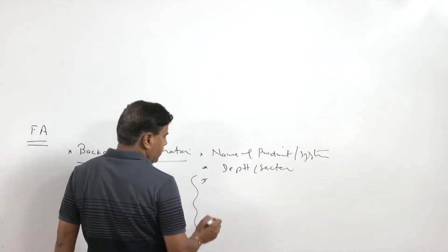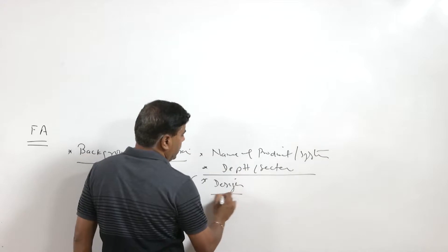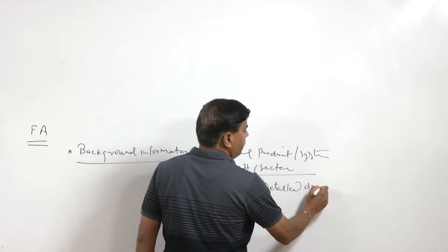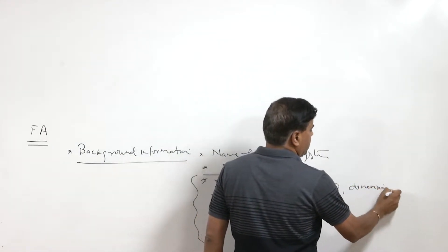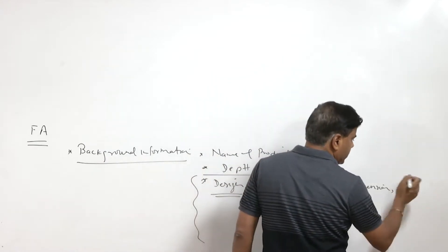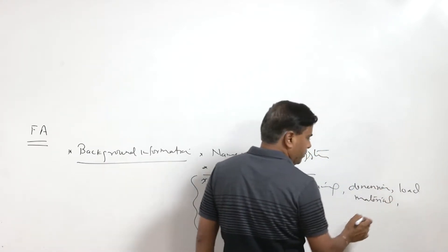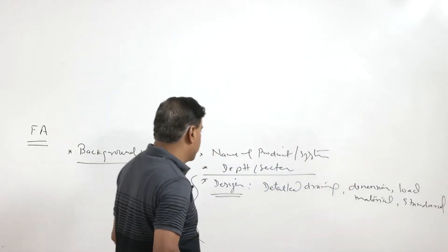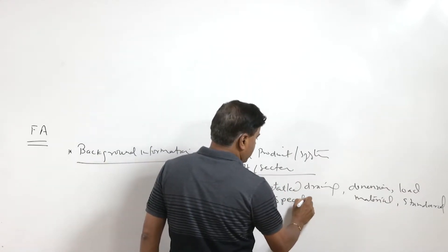We need to collect information about the design aspects. This includes detailed drawings of the product so that we have an idea about the expected dimensions, the kind of load for which it has been designed, the loading conditions, the material to be used for making that component, and what standards need to be followed. Detailed drawings with standards and specifications are obtained.